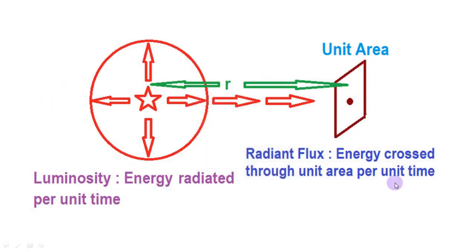To understand this properly, we have to consider this figure. Here, this star emits radiation in all directions. The energy emitted per unit time by this star in all directions is called the luminosity of this star. Out of this energy, the amount of energy which crosses through unit area of this surface which is situated perpendicularly to the flow of radiation is the radiant flux.